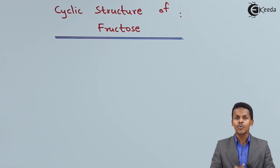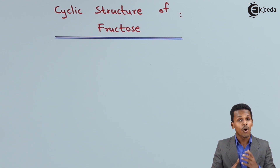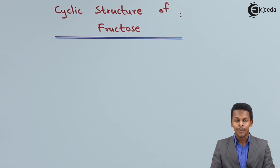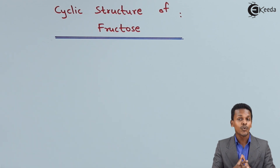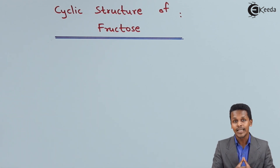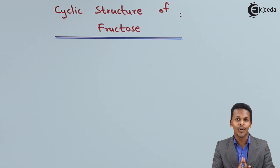In this topic I am going to talk about how we can draw the cyclic structure of fructose. But for that we must understand that this structure is known as the Haworth projection formula. So let me explain how we can draw the cyclic structure of fructose, or the Haworth projection formula for fructose.